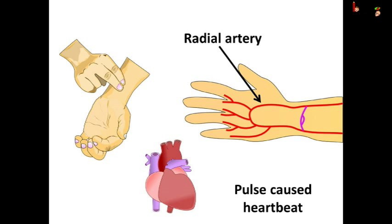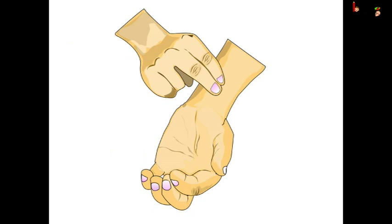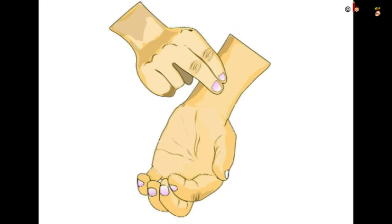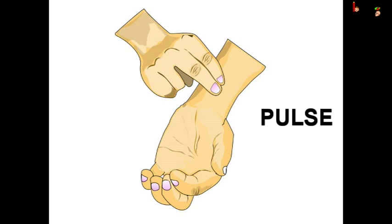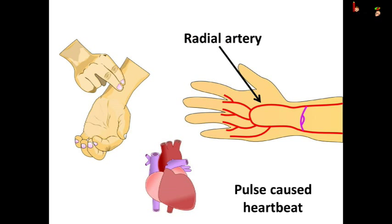We know the heart pumps blood into arteries. This pumping of blood creates a throbbing movement in the arteries. The doctor presses an artery at the wrist to check this throbbing movement, and it is called pulse. Pulse is created by the heartbeat, so you can count the heartbeat by counting the pulse.